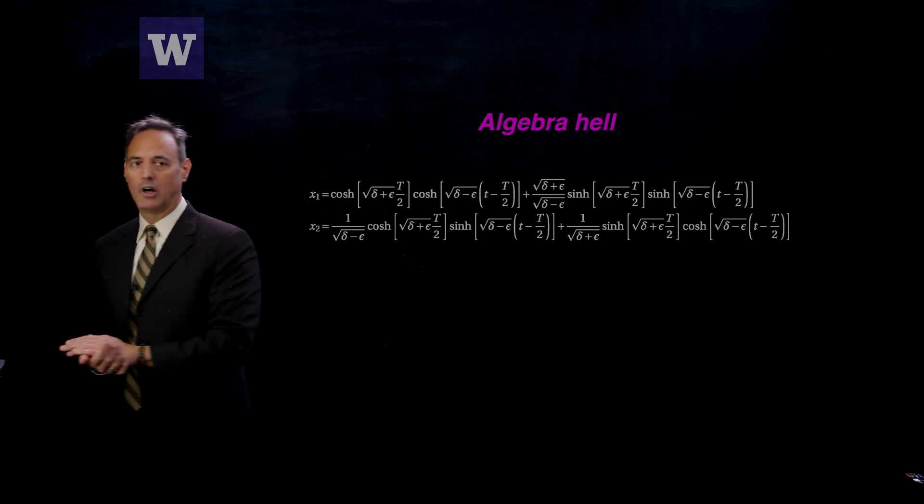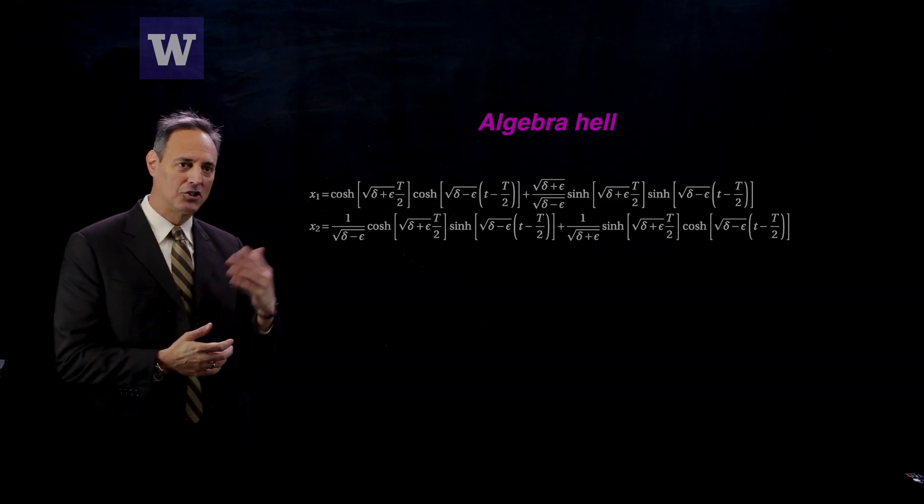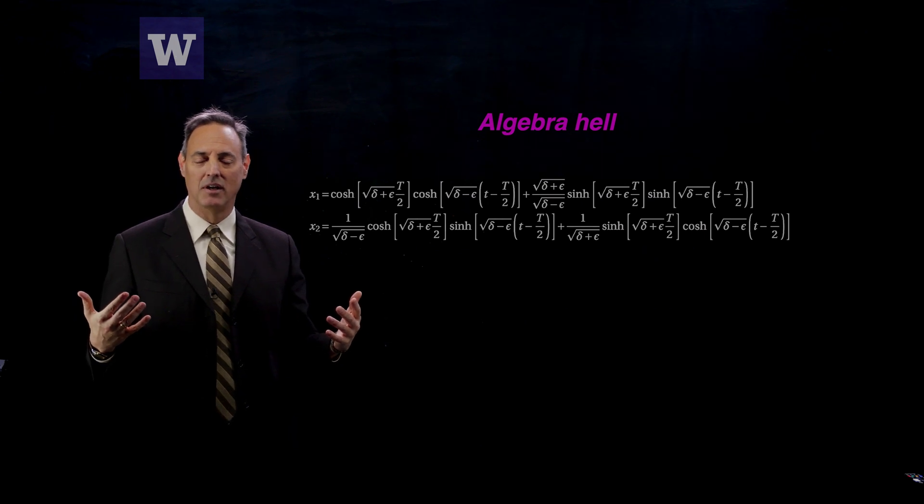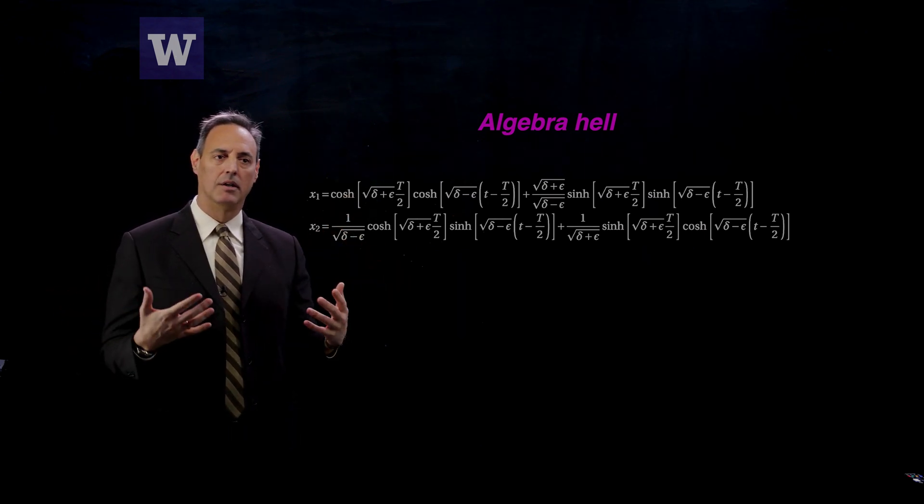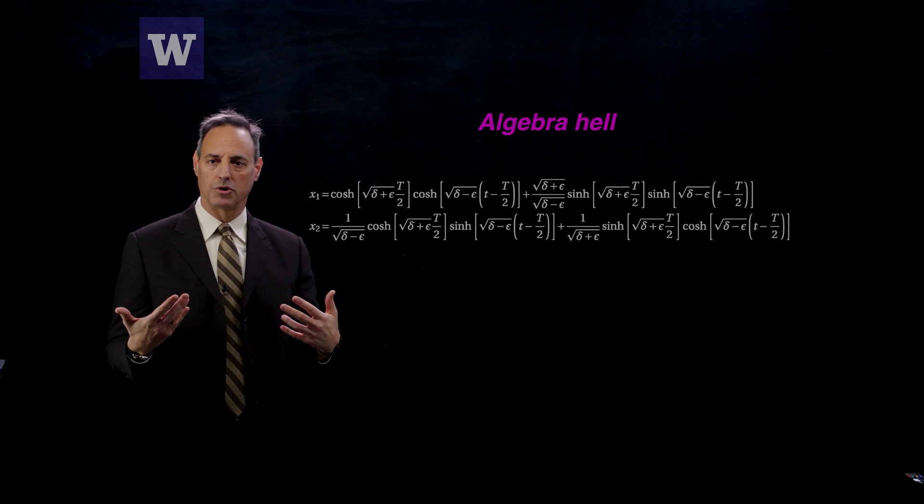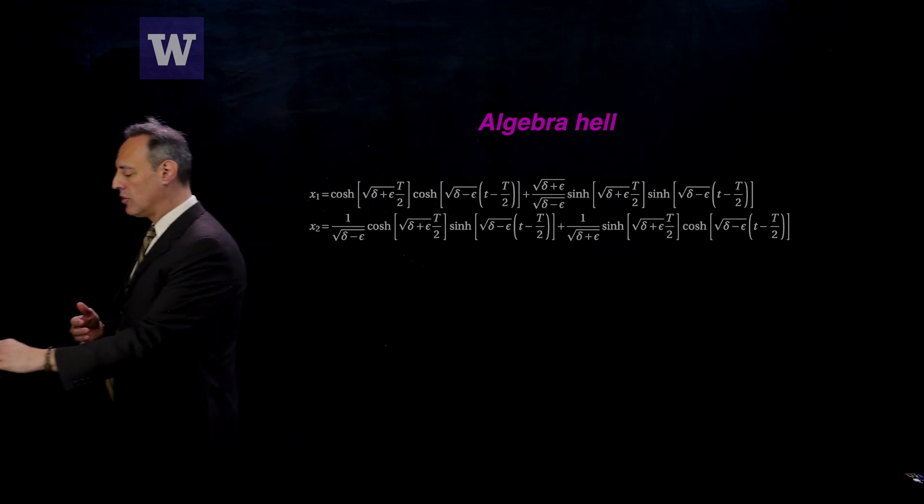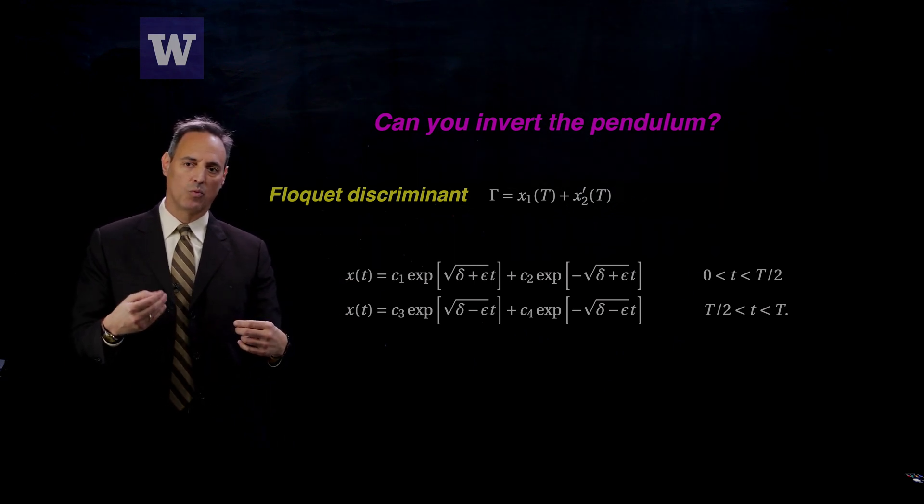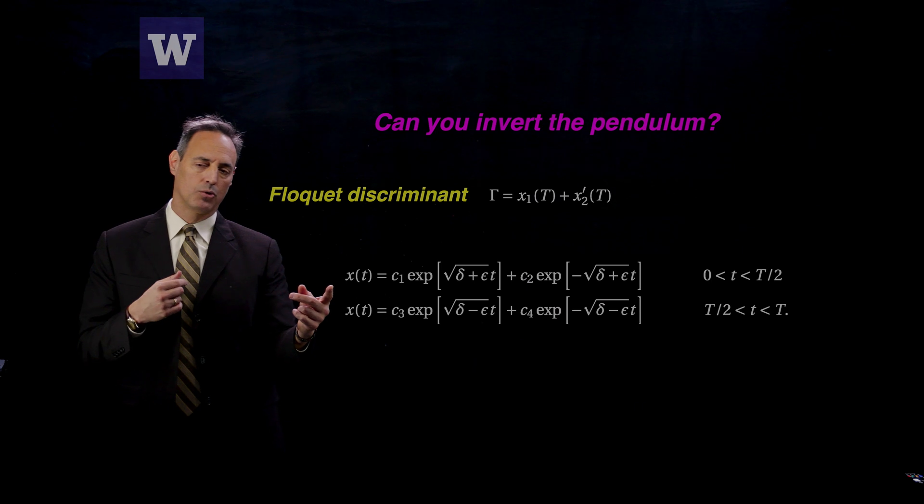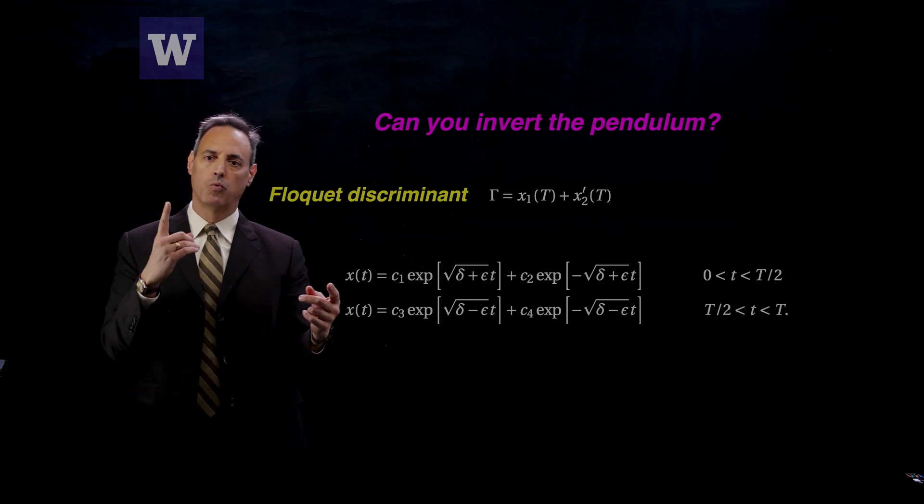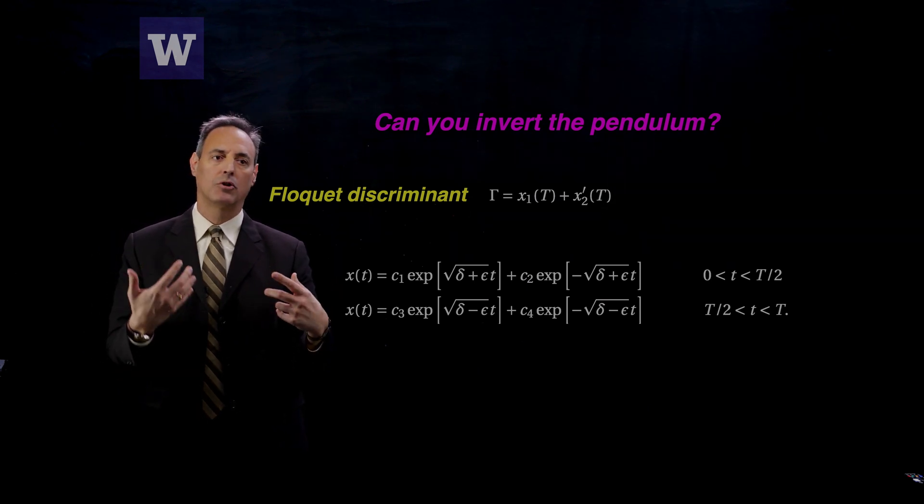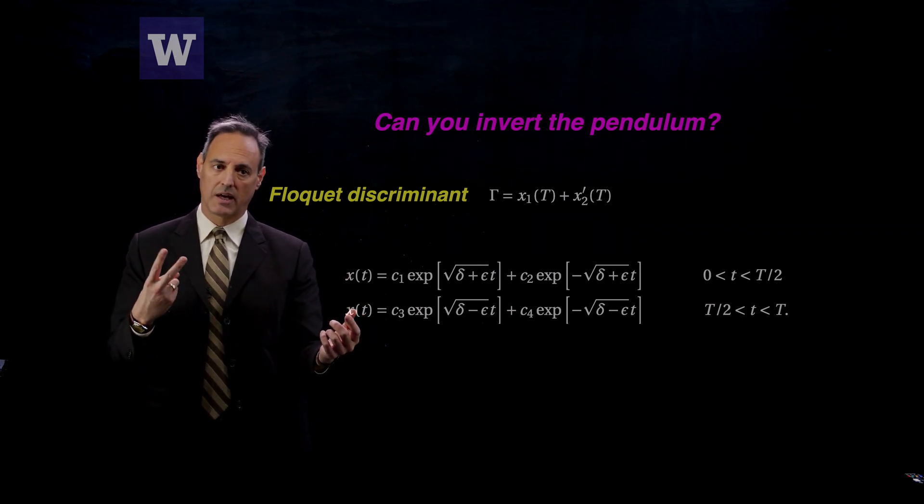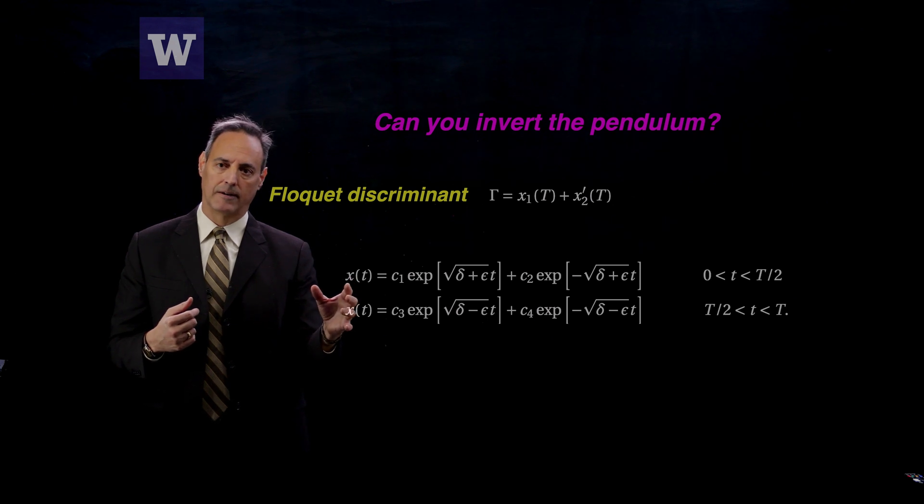So you can do a lot of algebra here, so let's just call this the algebra health slide. I've done it all for you. You can work this all out. I'm not going to go through it in detail, but this is just taking those two solutions, and now what you're going to do with these two solutions, you're going to say my fundamental solution x1 satisfies that at time t equals 0, the solution is 1, its derivative is 0. I input those initial conditions in, work this thing all the way through. Those are the two constraints I have that need to be satisfied.